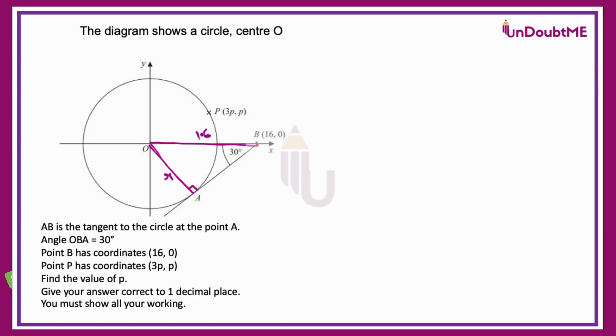So I'll use trig ratio over here. I'll use sine 30 is equal to opposite which is R over hypotenuse which is 16. That will give me the value of R as 16 sine 30. Sine 30 is 1 by 2, so 16 times 1 by 2 that is 8. Now we have got the radius of the circle.